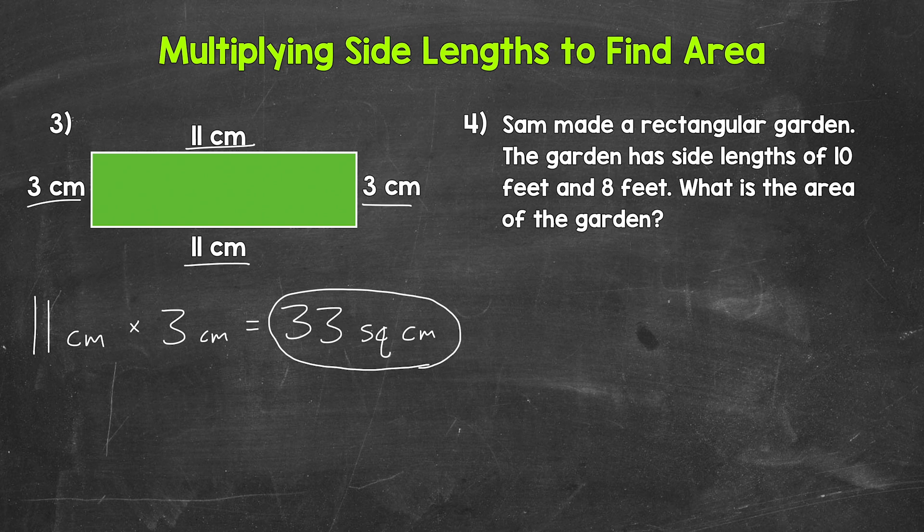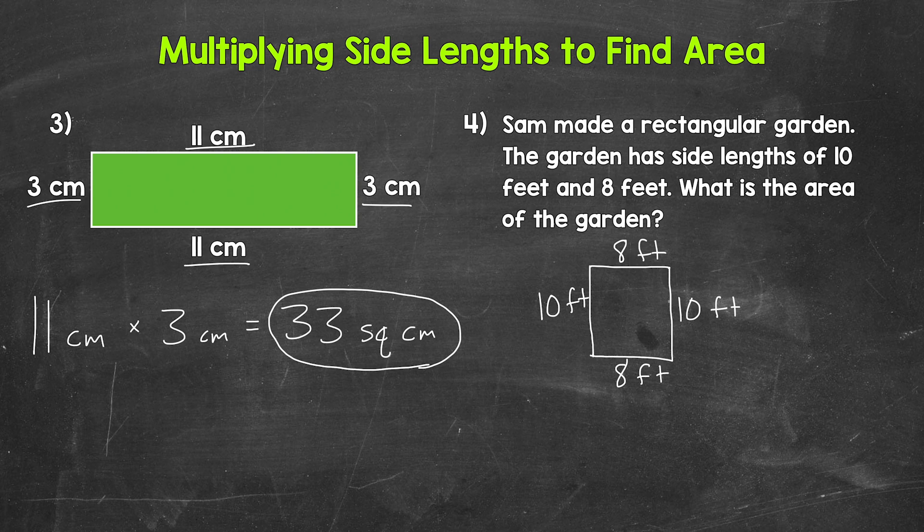Lastly, let's move on to number four, where we have Sam made a rectangular garden. The garden has side lengths of 10 feet and eight feet. What is the area of the garden? Let's start by drawing a quick picture to help us visualize. So we have 10 feet here and then eight feet here. So this is the garden. We have 10 feet, 10 feet, eight feet, and eight feet. So we need to find the area. Now I do want to mention if you drew the garden with eight feet on the sides and then 10 feet on the top and bottom, that would work as well. We're going to get the same area either way.